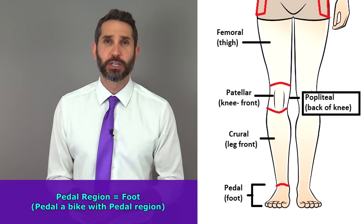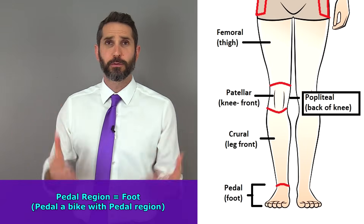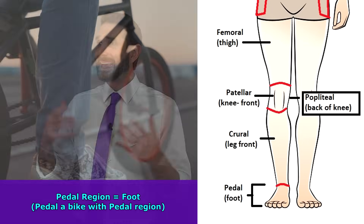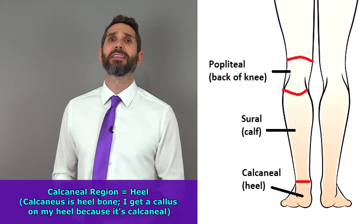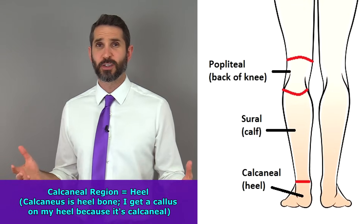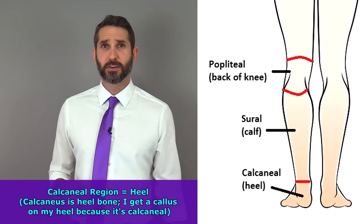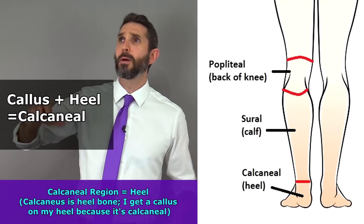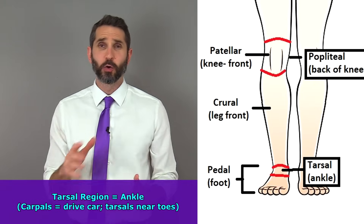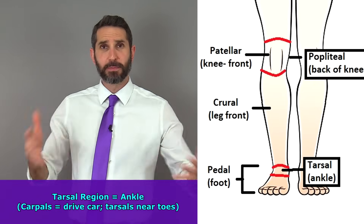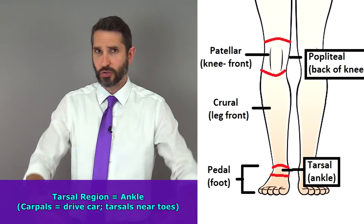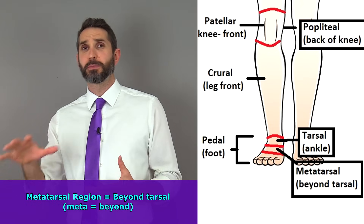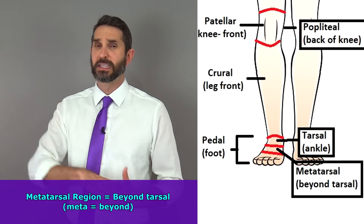The pedal region refers to your foot — what part of your body do you use to pedal a bicycle? The pedal region. The calcaneal region refers to the region of your heel — think calluses on your heel, calcaneal. The tarsal region is the whole ankle region — keep that straight from the carpal region: carpals drive a car, tarsals are closer to your toes. The metatarsal region is that area just beyond the tarsals — 'meta' means beyond.